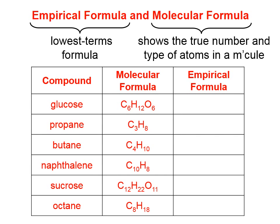If we look at this chart, the molecular formula for each of these substances is given. The empirical formula is the lowest whole number ratio of the atoms in that formula. So for glucose, the empirical formula is going to be CH2O.